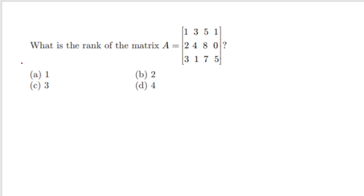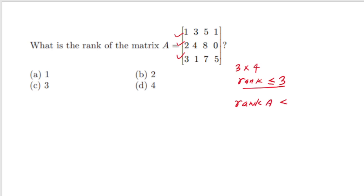First of all, what is the rank of this matrix that is given here? This is a matrix of size 3×4. So one thing is very clear: if the matrix is of size 3×4, it has 3 rows and 4 columns. So its rank can't be greater than 3 — the rank will be less than or equal to 3. That is the property of the rank of the matrix.